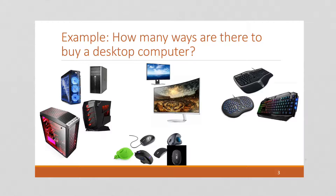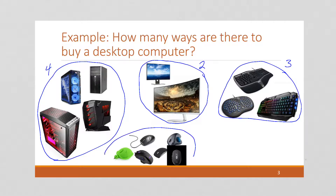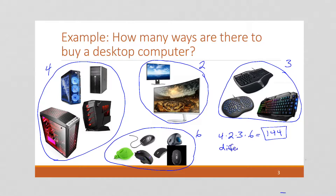So how many ways are there to buy a desktop computer if these are your options? Well, we have four ways of getting the box, two different options for the monitor, three different keyboards, and six different mice. Since each step is independent, what kind of box I get doesn't depend on what kind of keyboard I got. So there are four times two times three times six equals 144 different ways to buy a computer.